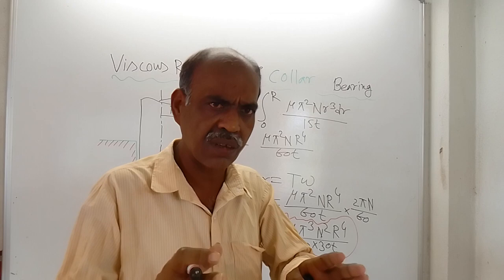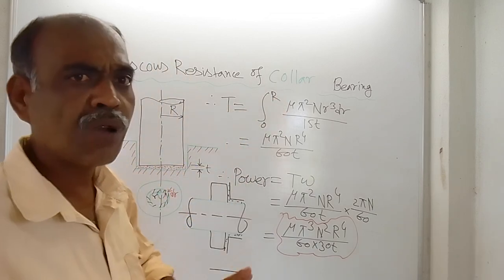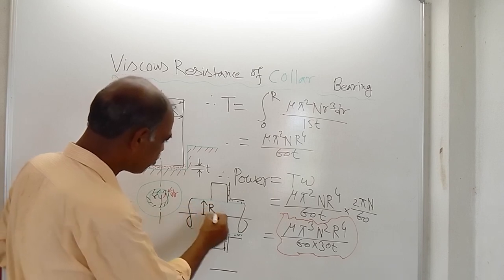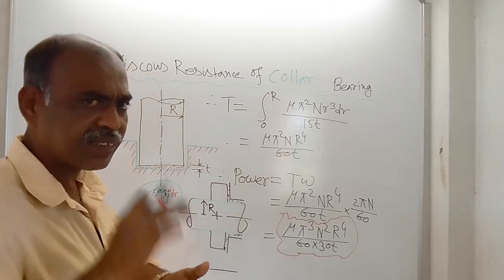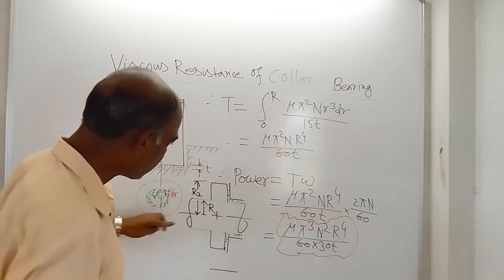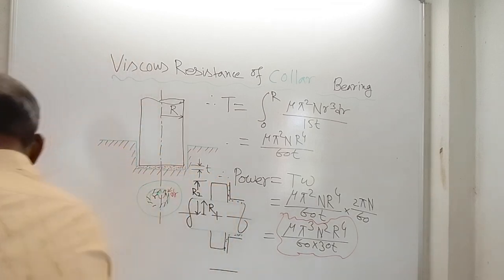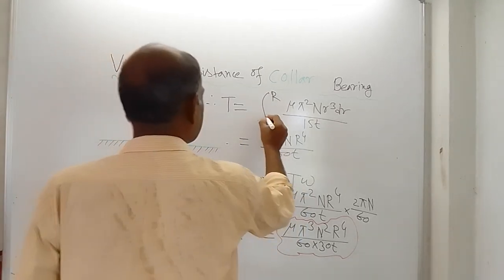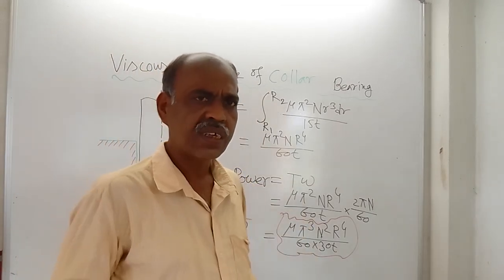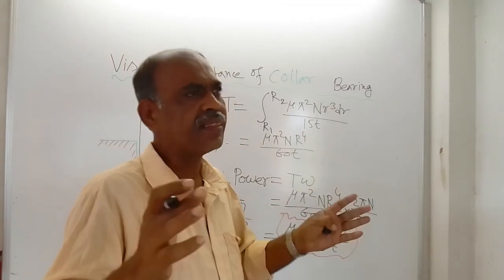The calculation is the same as for viscous resistance of footstep bearing, but here the integration limits will not be from zero to capital R. It will be from inner radius r1 to outer radius r2. r1 is the inner radius measured from the centerline of the shaft, and r2 is the outer radius. So the integration limit will be from r1 to r2. First you calculate shear stress, then shear force, then torque.